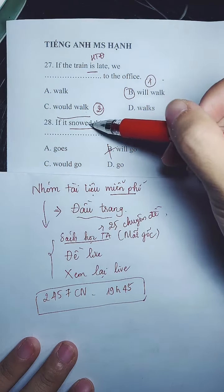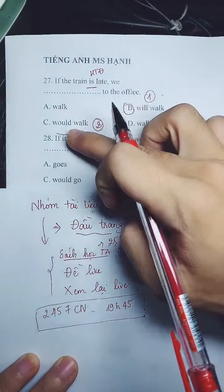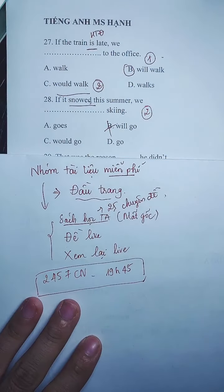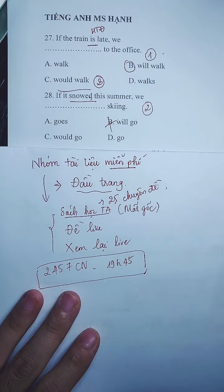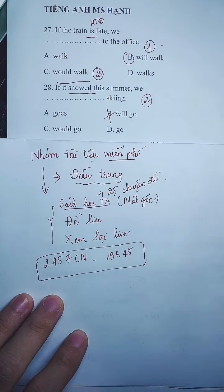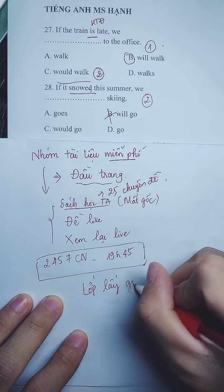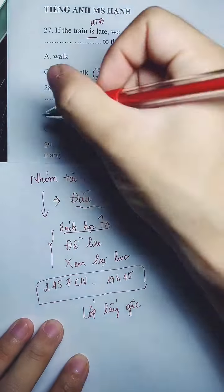Động từ ở câu 28 là quá khứ đơn — loại 2. Loại 2 thì mệnh đề chính dùng 'would + nguyên mẫu'. Vậy đáp án câu 28 là C. Khi đi thi gặp câu 27-28 thì phải suy nghĩ từng bước loại trừ nếu không thuộc cấu trúc.